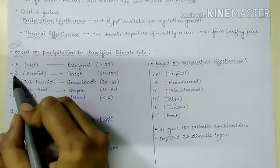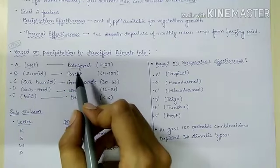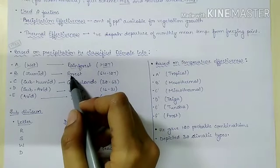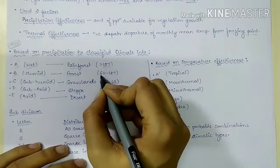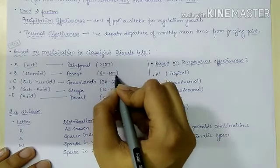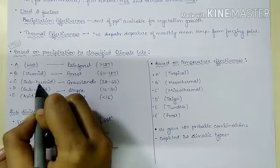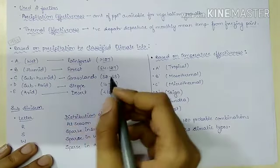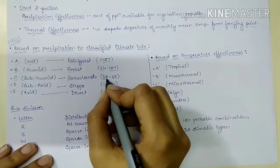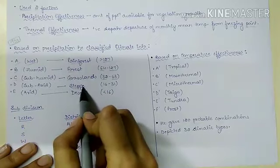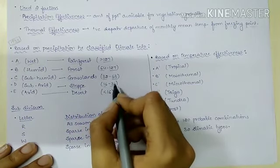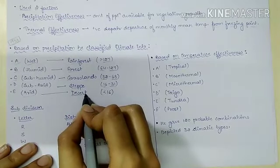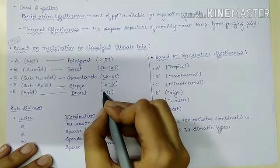Type D is subarid or steppes where the precipitation efficiency index is 16 to 31. Type E represents the arid zone with desert vegetation where the precipitation efficiency index is below 16. This precipitation efficiency index was further subdivided into four types based on distribution of precipitation: small r (rainfall in all seasons), small s (sparse rainfall in summer — dry summer), small w (sparse precipitation in winter — dry winter), and small d (sparse precipitation in all seasons).